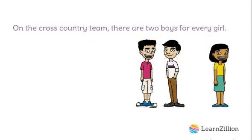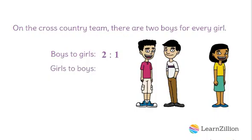Not only can we represent this same ratio using the word 'to,' a colon, or as a fraction, we can also represent the same situation by looking at it multiple different ways. We can represent this situation with a ratio of boys to girls, which we already said is two to one. We can also represent this situation as a ratio of girls to boys. We know there are two boys for every one girl, so there is one girl for every two boys. These two ratios are called part-to-part ratios — they compare the quantity of one thing to the quantity of another thing.